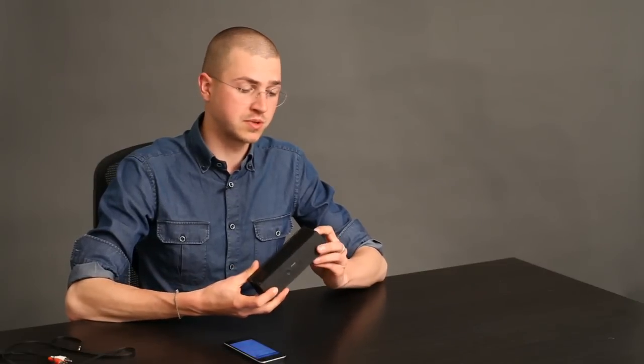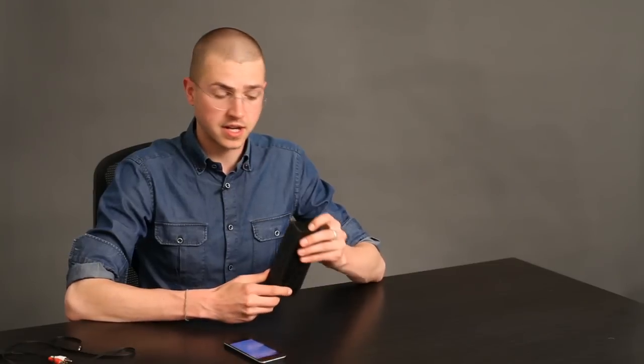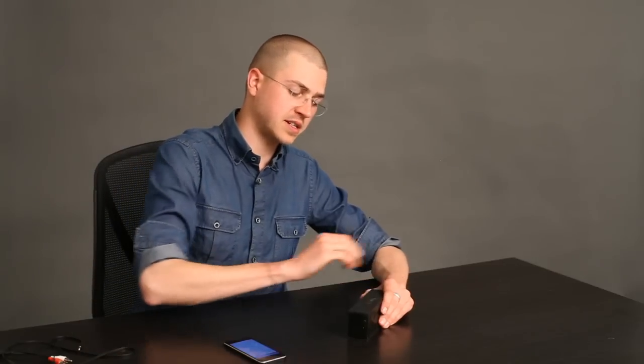This is the Jambox, just an example of something that works with Bluetooth. So I would switch it on and put it into pairing mode, and then it would appear right here. I'd tap on it, and my iPhone would connect to the Jambox, and I'd be able to send music wirelessly to it.